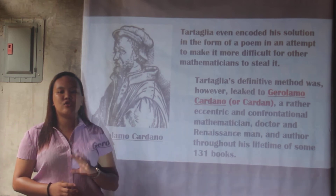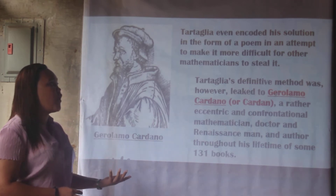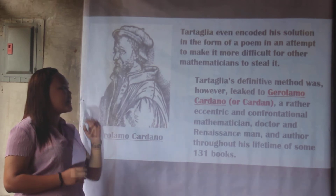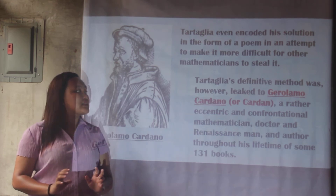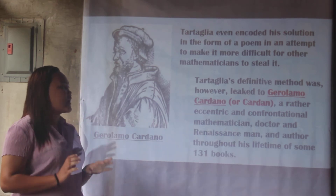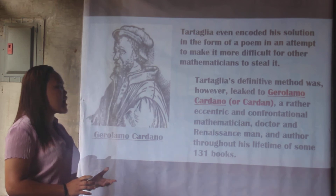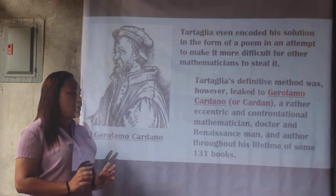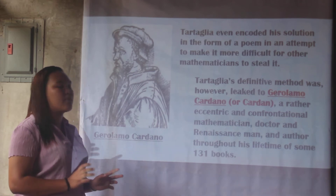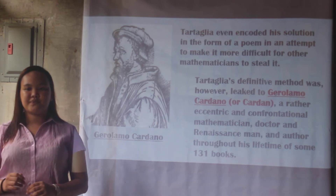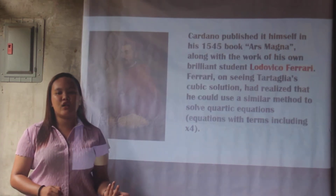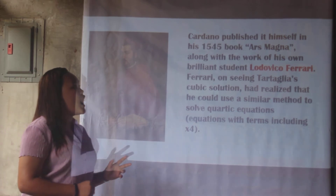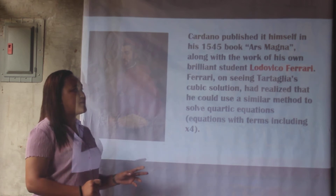Tartaglia even encoded his solution in the form of a poem in an attempt to make it more difficult for other mathematicians to steal it. His definitive method was, however, linked to Gerolamo Cardano — a rather eccentric and confrontational mathematician, doctor, and Renaissance man, and author throughout his lifetime of some 131 books — who published it in his 1545 book Ars Magna, along with the work of his own brilliant student, Lodovico Ferrari.